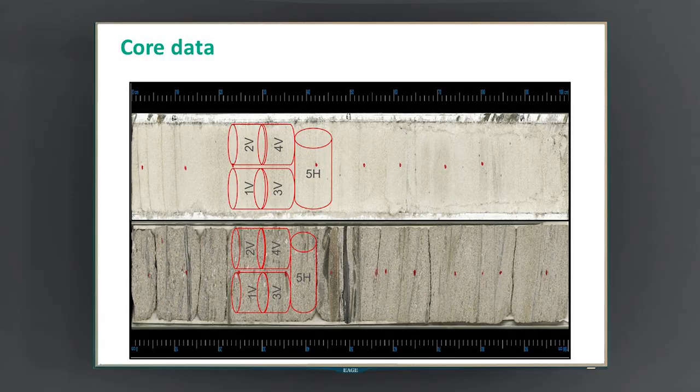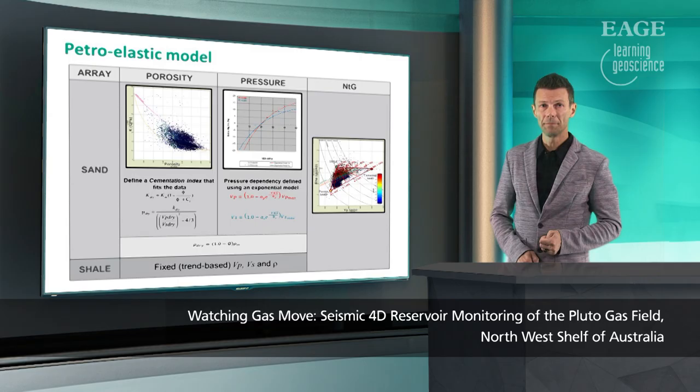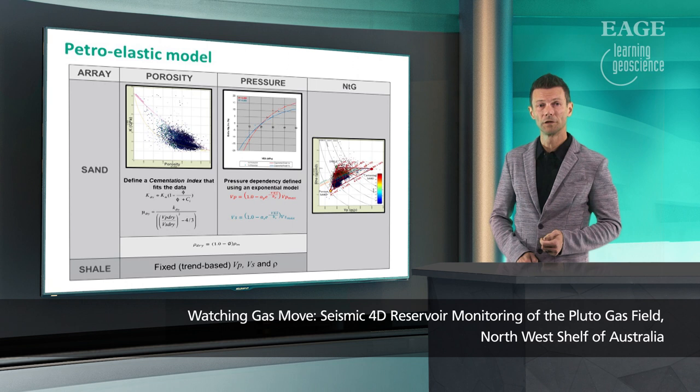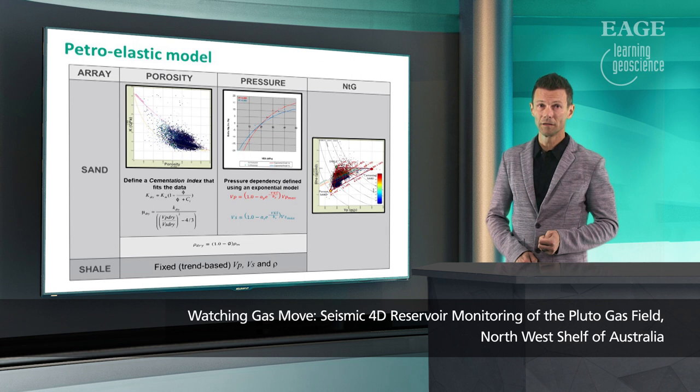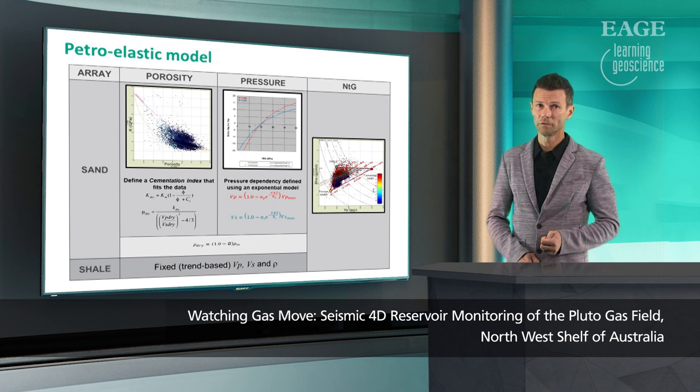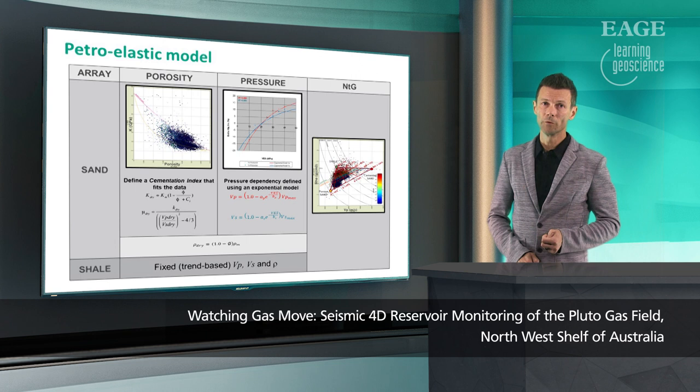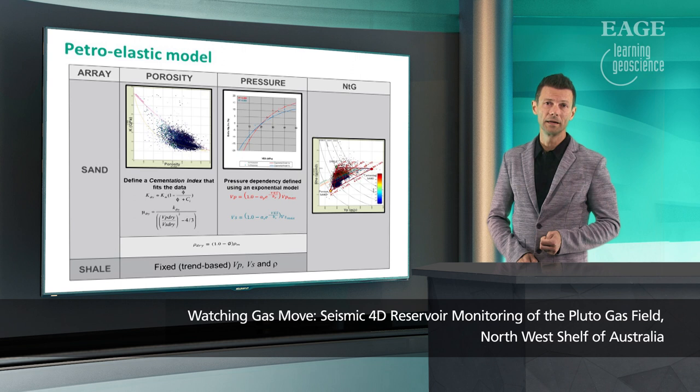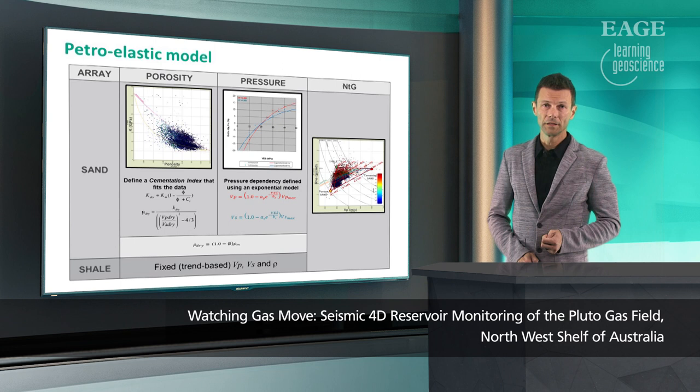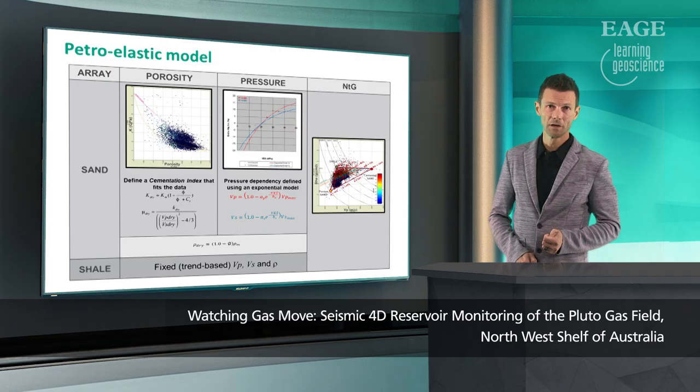This data is used as input for a petroelastic model, which describes the change in elasticities as a function of porosity, pressure, and saturation. You can see that the change in porosity can be very well described by a straight line, and the change in pressure follows some sort of hyperbolic model. These are then used to describe the framework of the sands that are then mixed with the shales, which have a defined velocity. These shales are then taken from a depth stream and then combined with these sands using the net-to-gross method described in this slide.